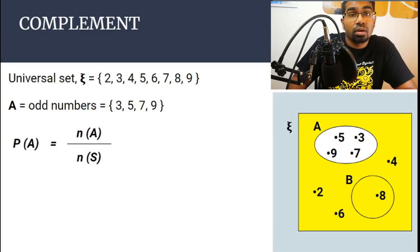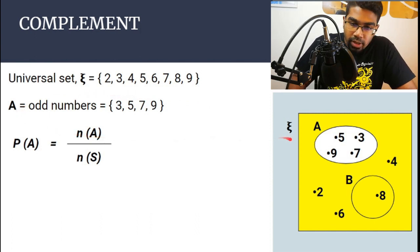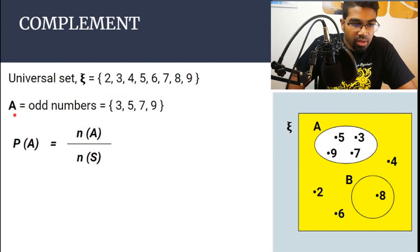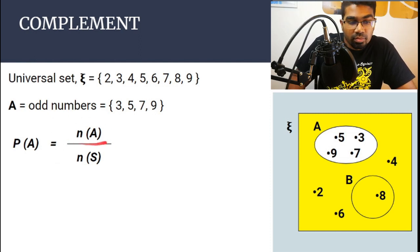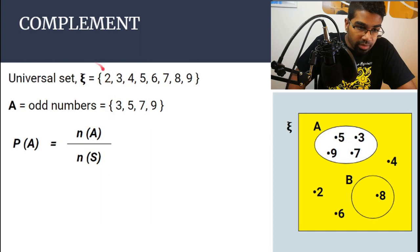Now how do we find the probability of the complement of an event? Let's use the same example. Set A contains elements 3, 5, 7, and 9. The probability of A is the number of times A occurs over the total number in the sample space. From two to nine we have eight numbers in total.